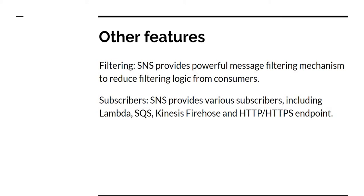In terms of subscribers, for application-to-application communication, SNS provides various subscriber options including AWS Lambda, SQS queues, Kinesis Firehose, and HTTP or HTTPS endpoints. So if you are building any serverless feature using Lambda or SQS, SNS can be added out of the box. But if you are using an EC2 or ECS-based application, you can integrate with an HTTP or HTTPS endpoint where, when a message is delivered to SNS, your endpoint will be called back with the message.